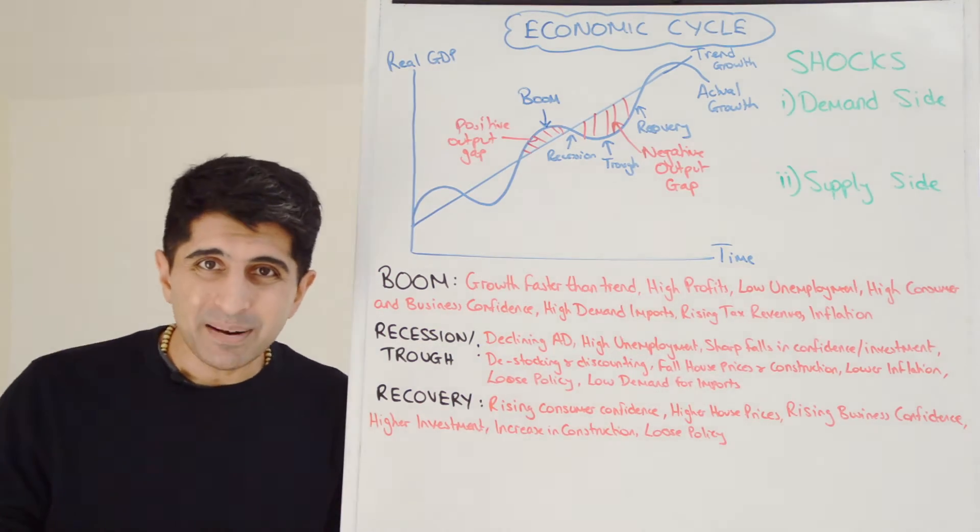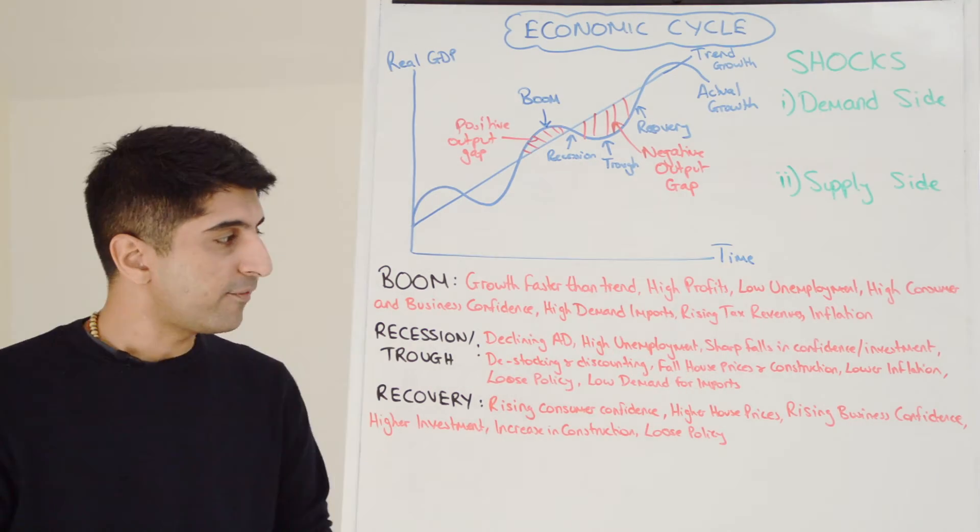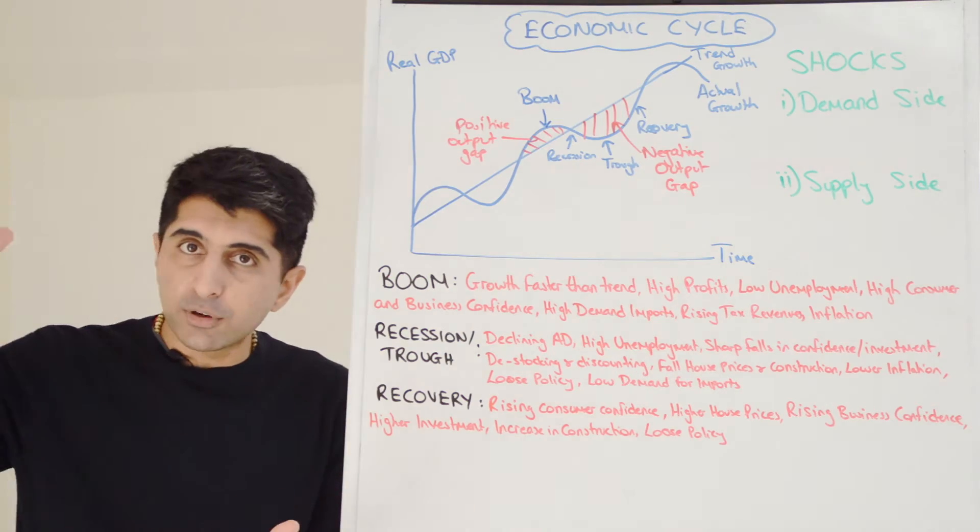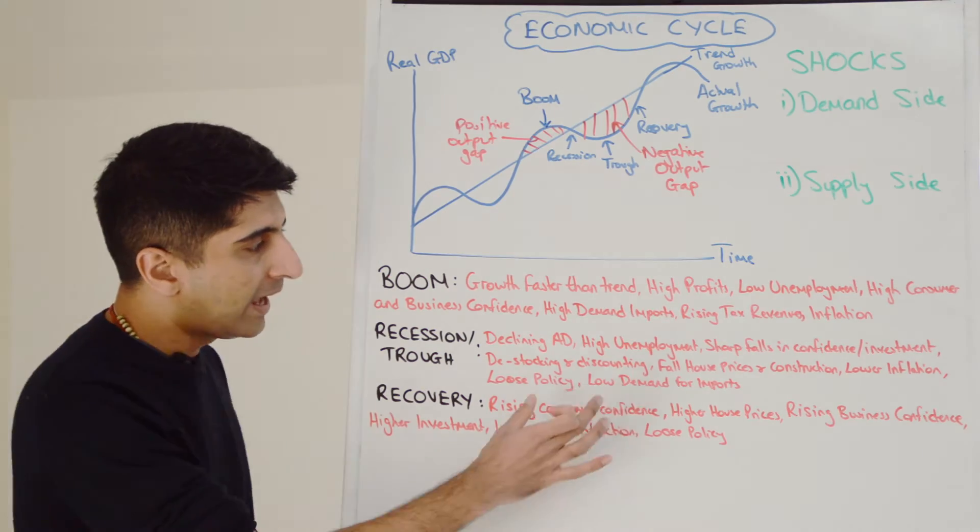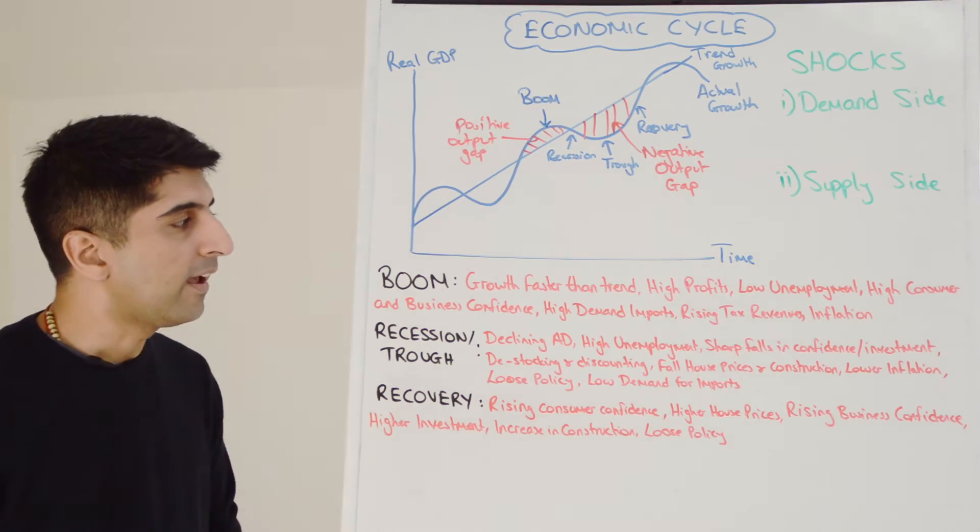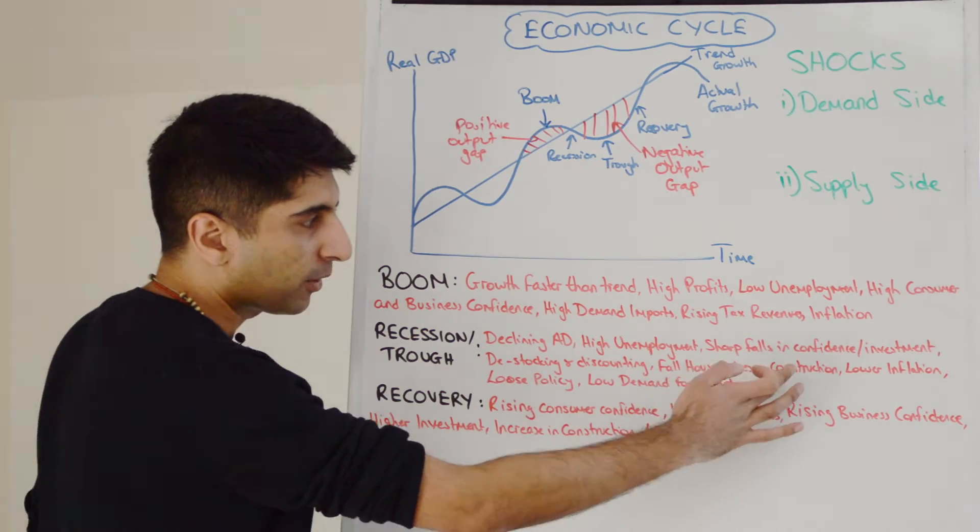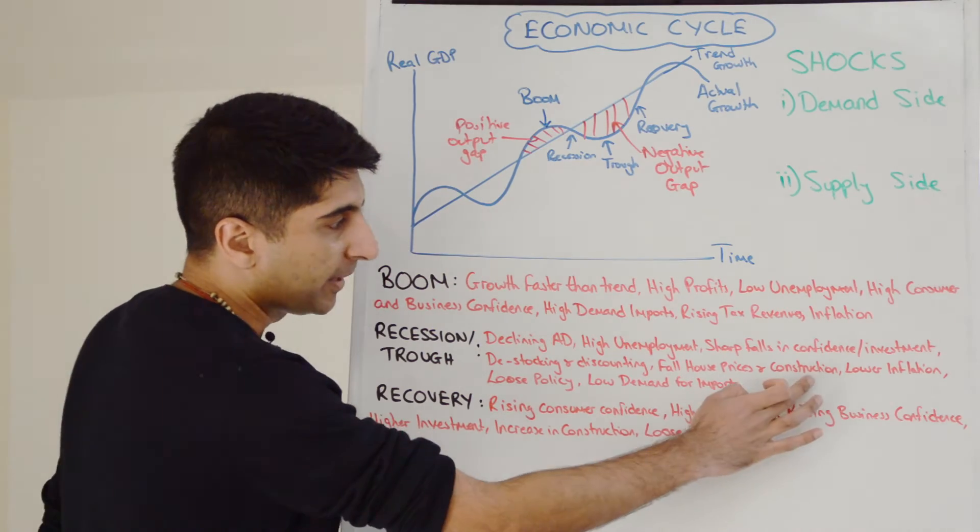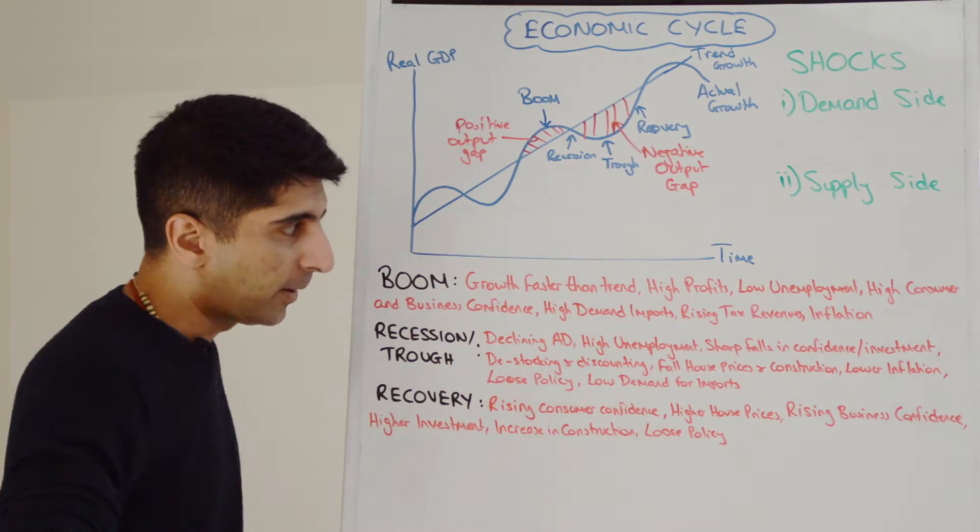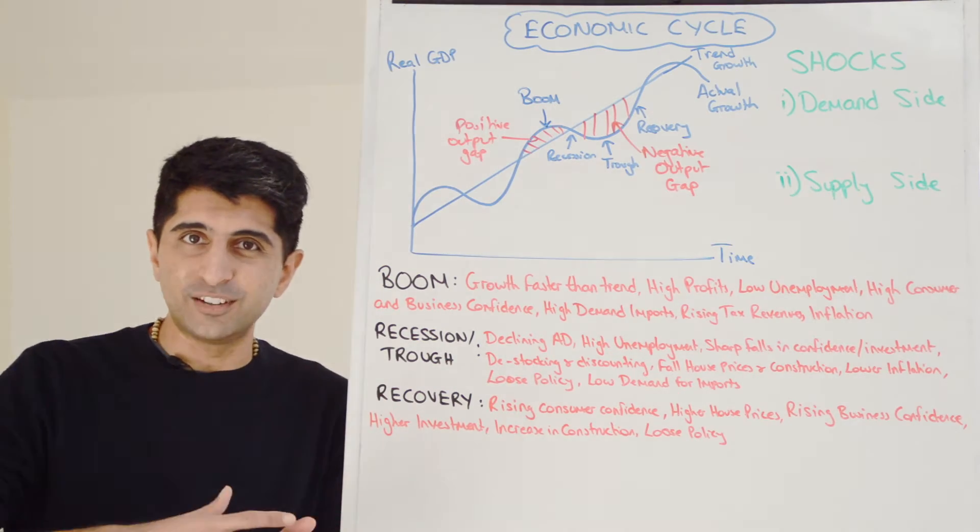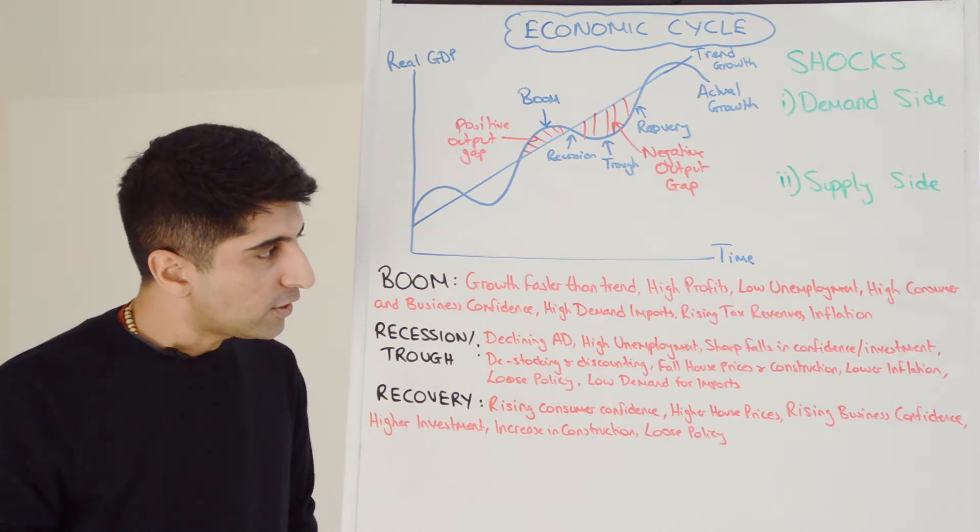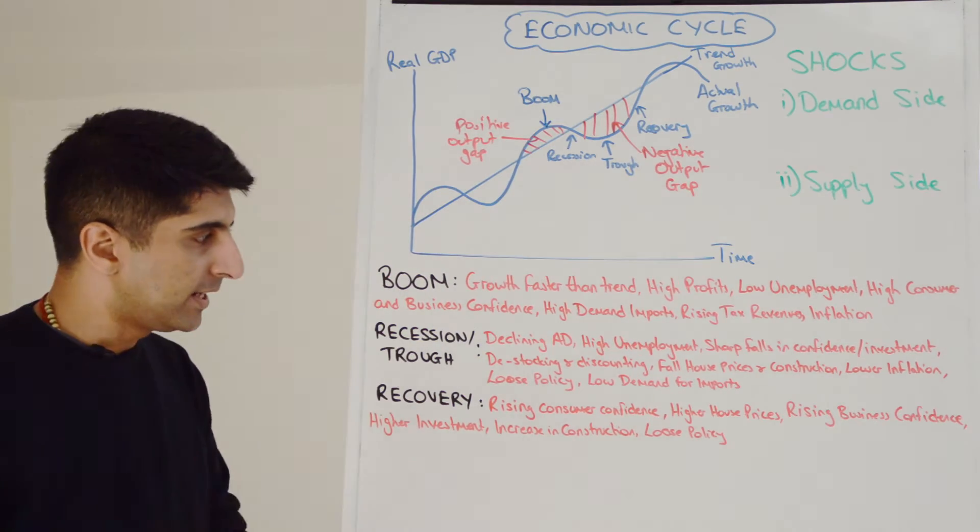Firms, though, in order to try and maintain profit margins and high revenues, will be de-stocking. They won't be producing more. They'll be getting rid of their stocks and trying to sell their stocks. And also, they'll be discounting their prices. Clear signs that the economy is struggling and consumers are not spending. Already mentioned the fall in house prices and construction activity because of a fall in consumer confidence, but also because of a fall in investment. So firms are not expanding their factories. They're not looking to build skyscrapers. We can expect lower demand-pull inflation naturally, as there is lower demand, lower AD in the economy.